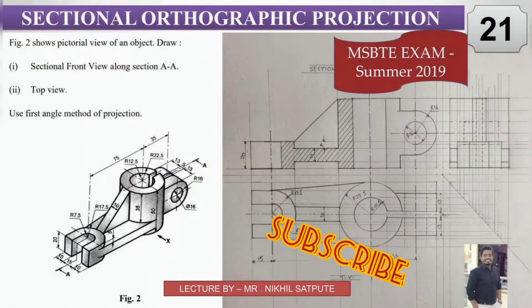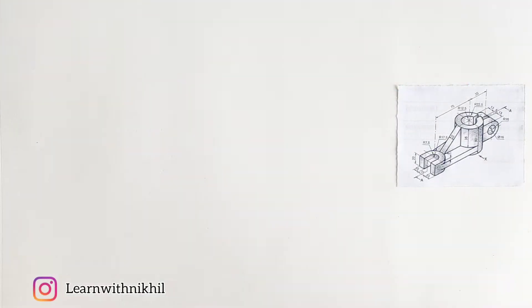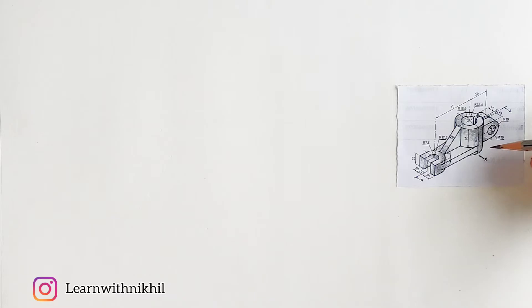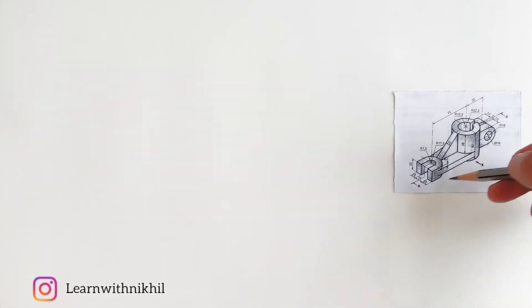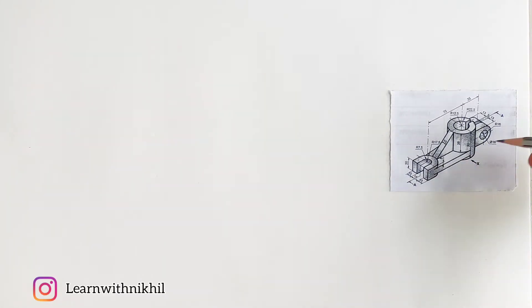Hello and welcome back to my channel Learn with Nikhil. In this video we have taken another sum on sectional orthographic projection. Here we have been given a three-dimensional block and in the direction of arrow X we have to find its sectional front view and then the top view.